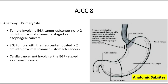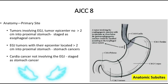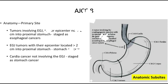As per the AJCC staging, a tumor involving the oesophagogastric junction with tumor epicenter no more than 2 cm into the proximal stomach is staged as oesophageal cancer. Siewert type 1 and type 2 are staged and treated as oesophageal cancer. While the oesophagogastric junction tumor with epicenter located more than 2 cm into the proximal stomach is staged and managed as per the guidelines for gastric cancer. So Siewert type 3 is managed as per gastric cancer.